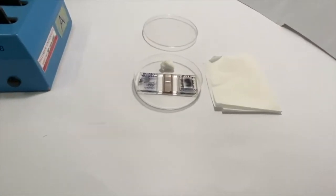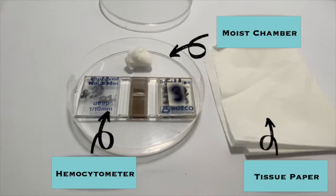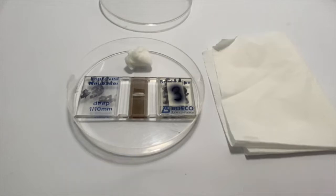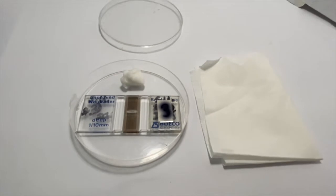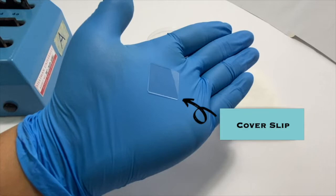First, gather the materials you will need. An improved Neubauer Hemocytometer, a petri dish or any container that is kept moist by a damp cotton ball, some clean tissue paper or gauze, and a coverslip which is specifically designed for use with the hemocytometer.